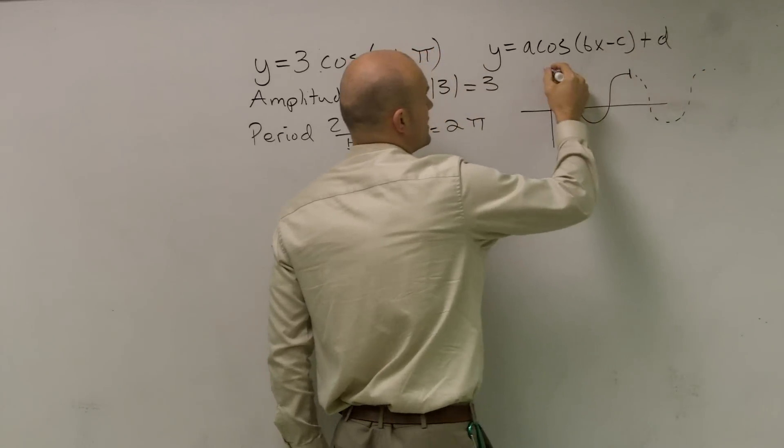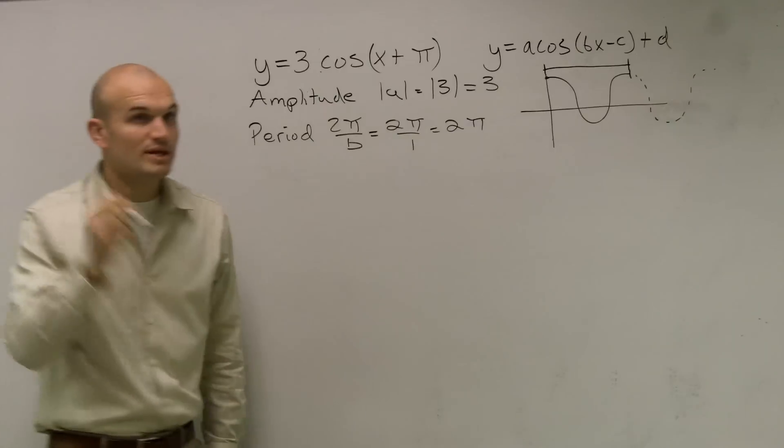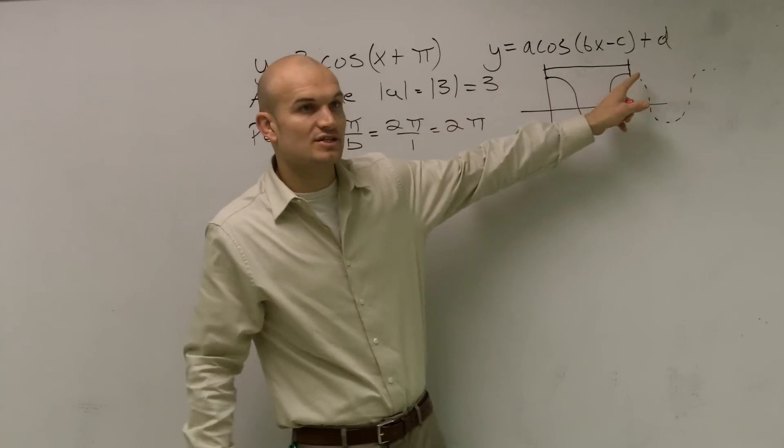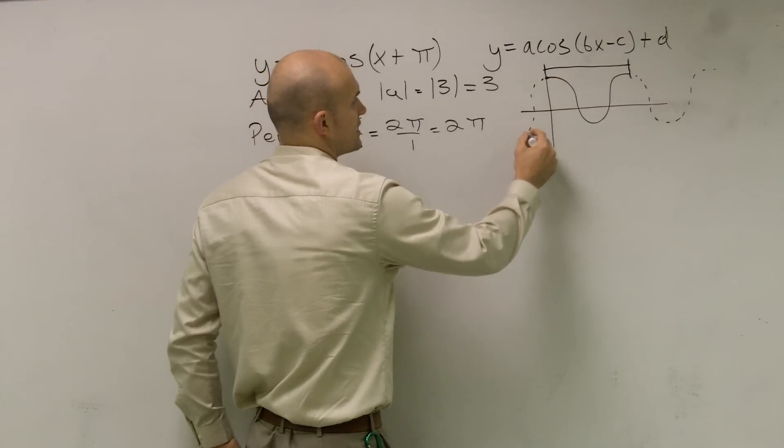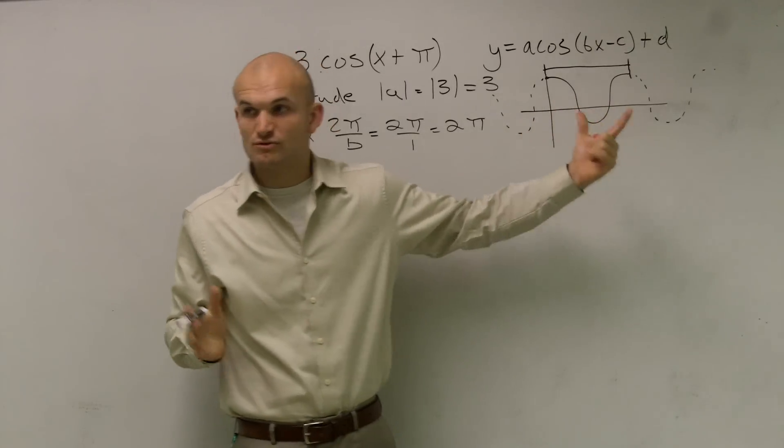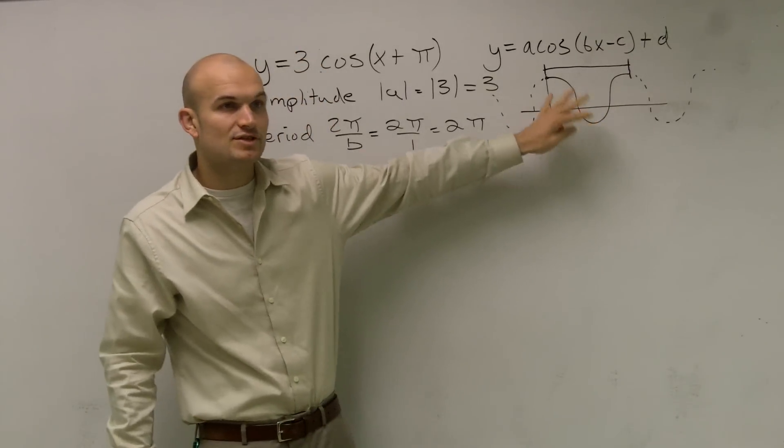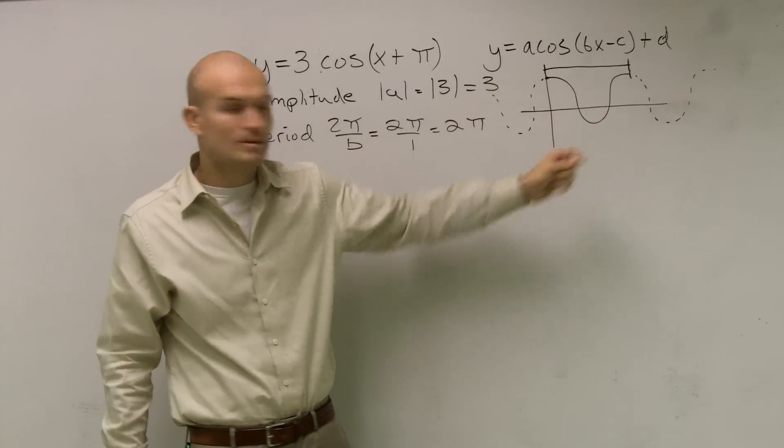Remember, the period is the distance that it takes your graph to complete one cycle, meaning from where it starts to where it finishes to get back to where it starts again, because these are cyclical functions. They keep going on forever. But the distance to complete one cycle is what we call a period. So you have to know what the cosine graph starts with, what it looks like. Got it?